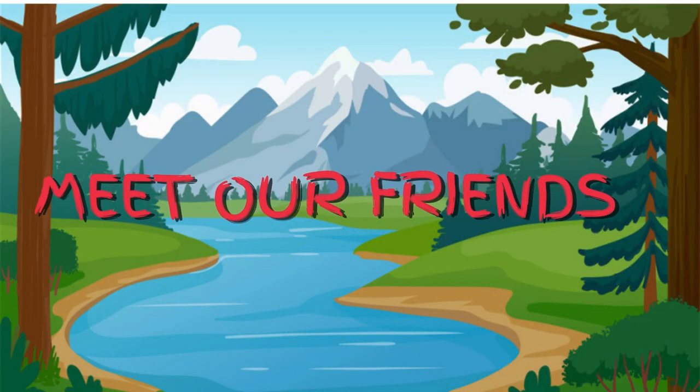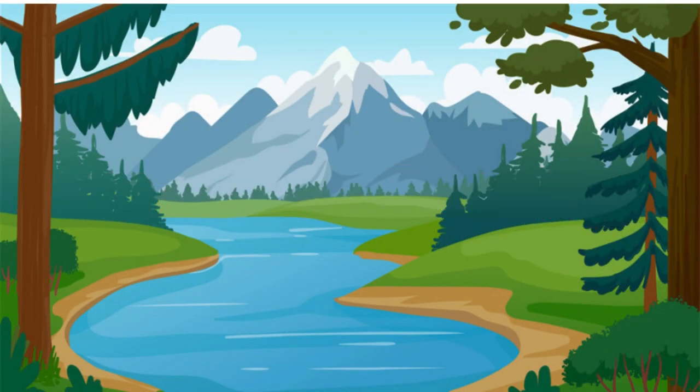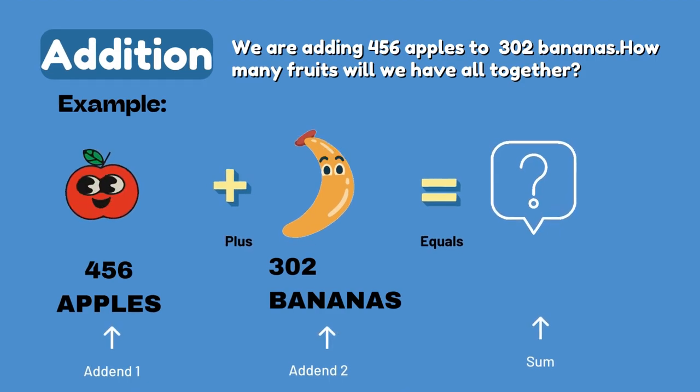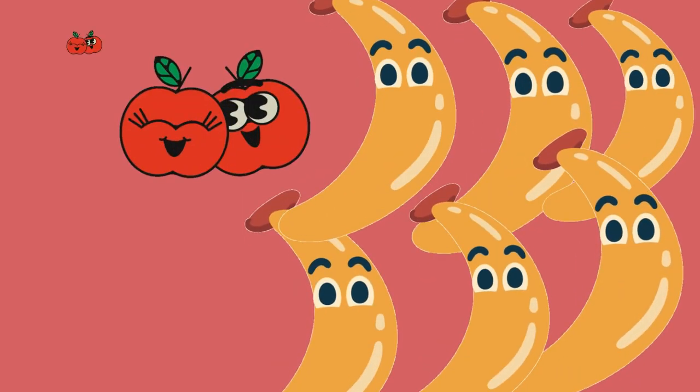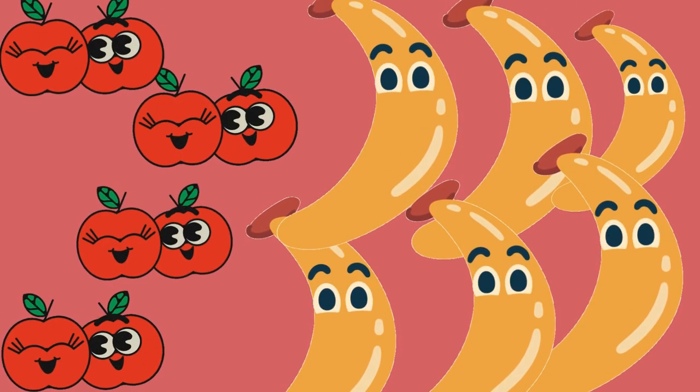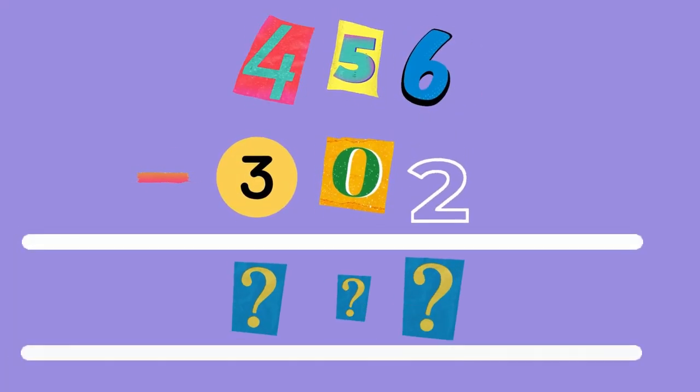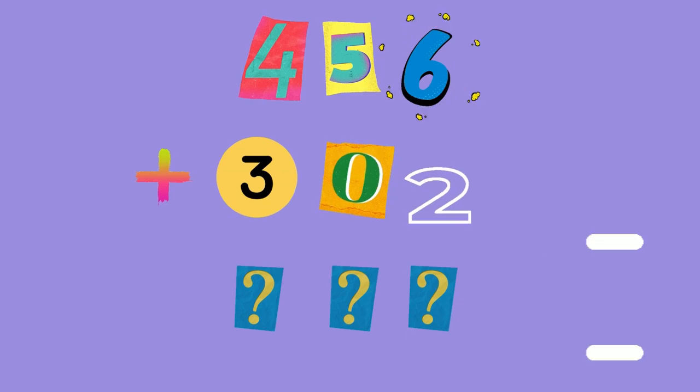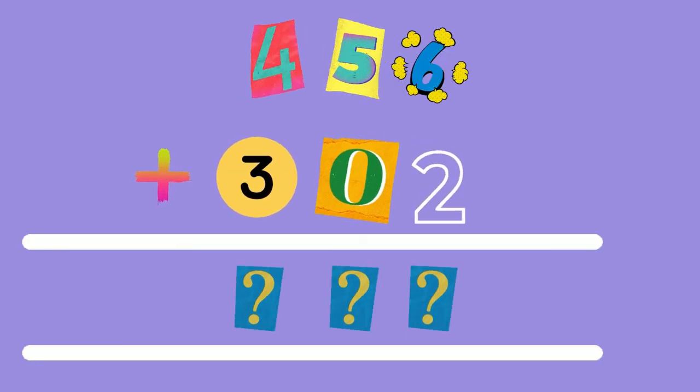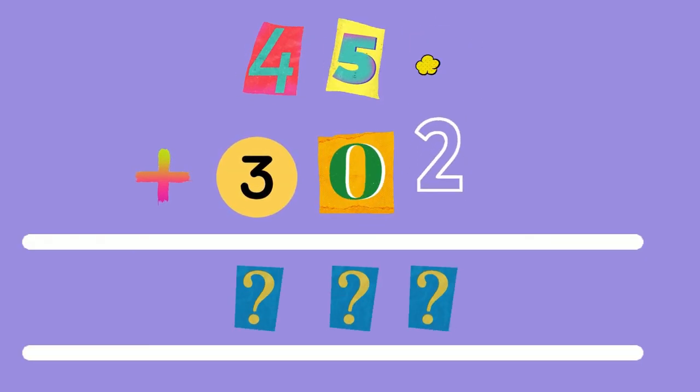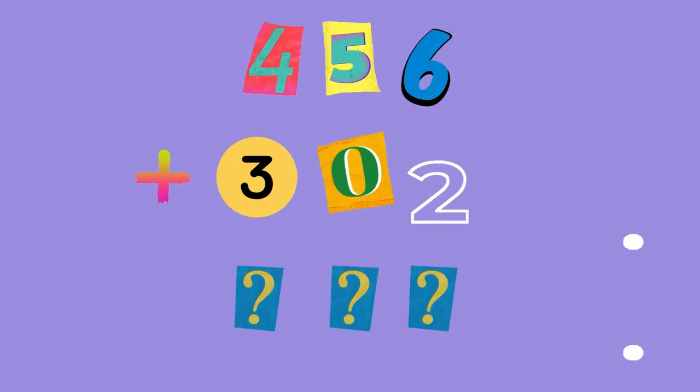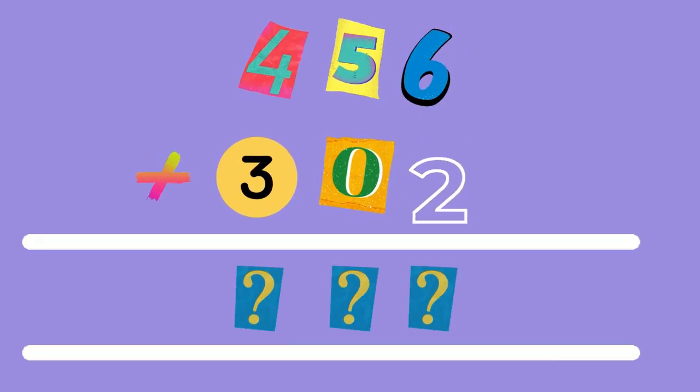Meet our fruity friends: 456 apples and 302 bananas. They are eager to join forces and become an even bigger number. To add these two numbers together, let's stack our apples and bananas just the way we stack blocks on top of each other. Let's break it down step by step.